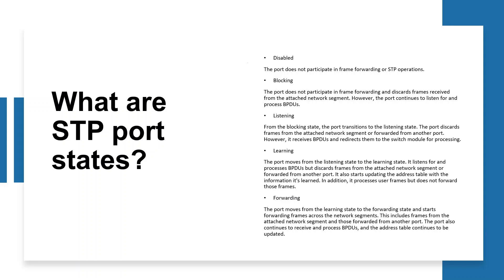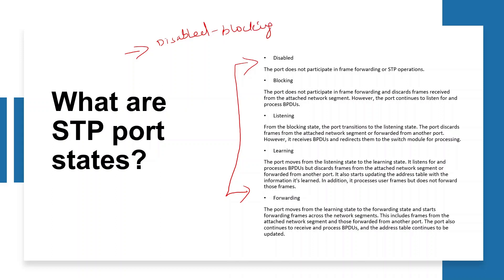This is the Spanning Tree. There are different states in STP. For the first port, there is a disabled state. The states are: disable, blocking, listening, learning, and forwarding.